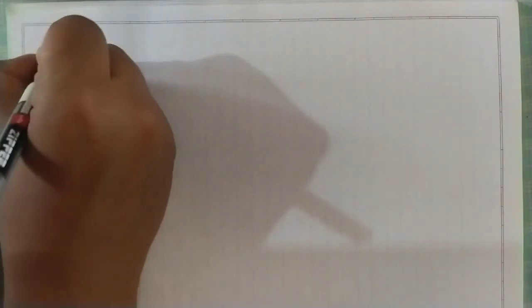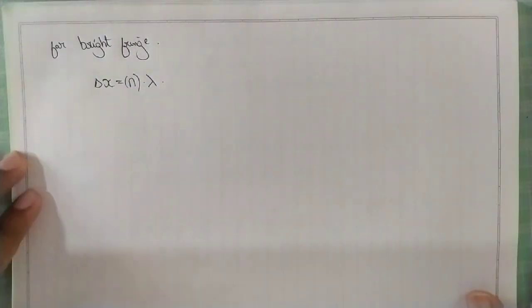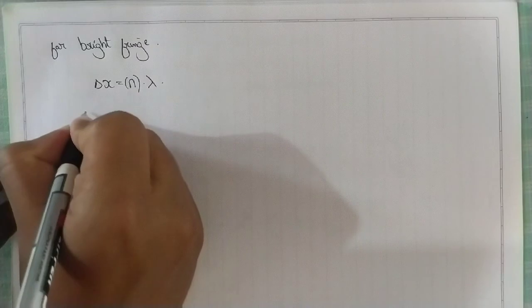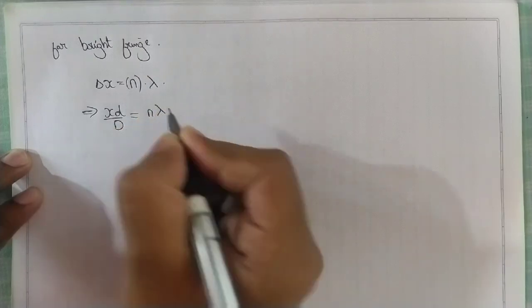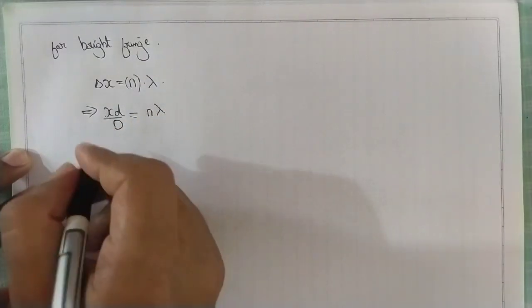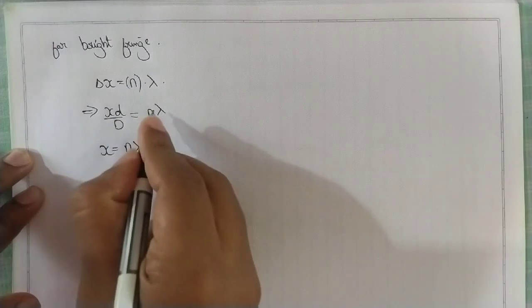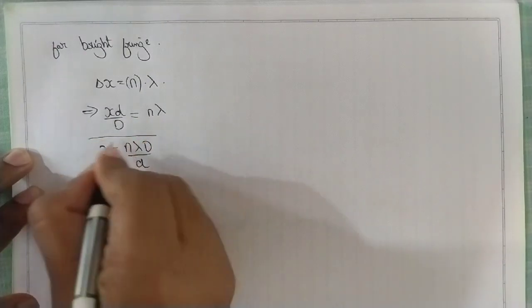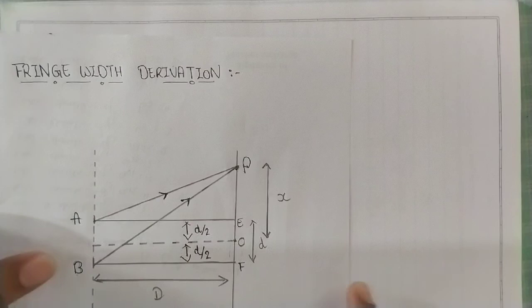Now for the bright fringe condition: there is a condition for bright fringe where the path difference should be an integral multiple of the wavelength, i.e., delta X = nλ. So we have XD/d = nλ, which gives us X = nλD/d. This distance X is shown in the diagram.